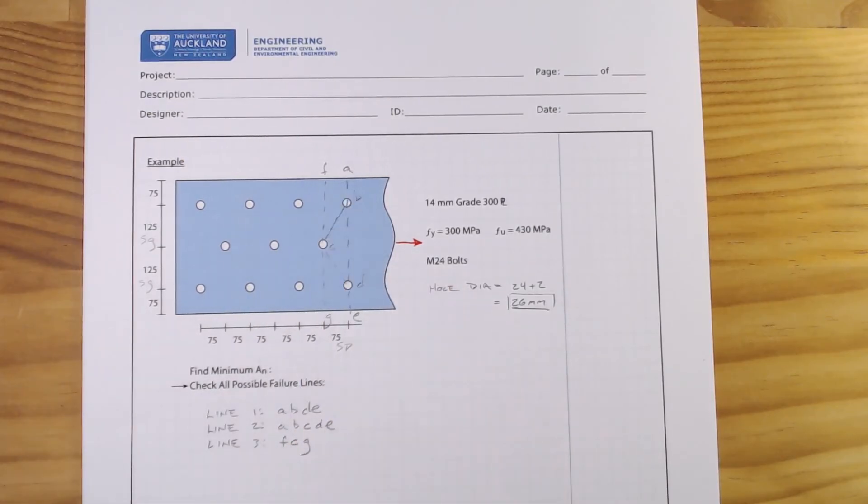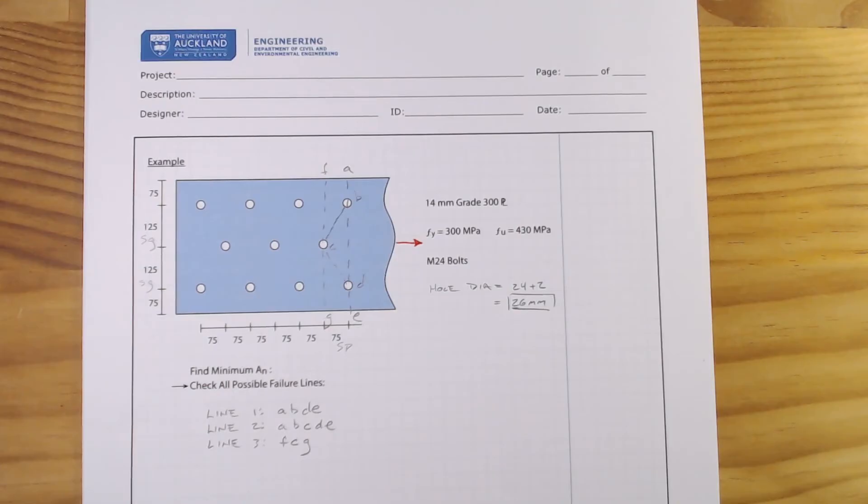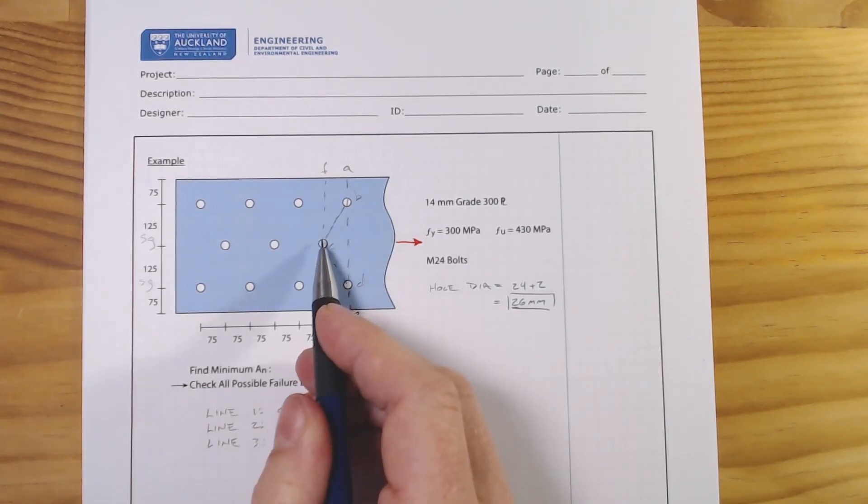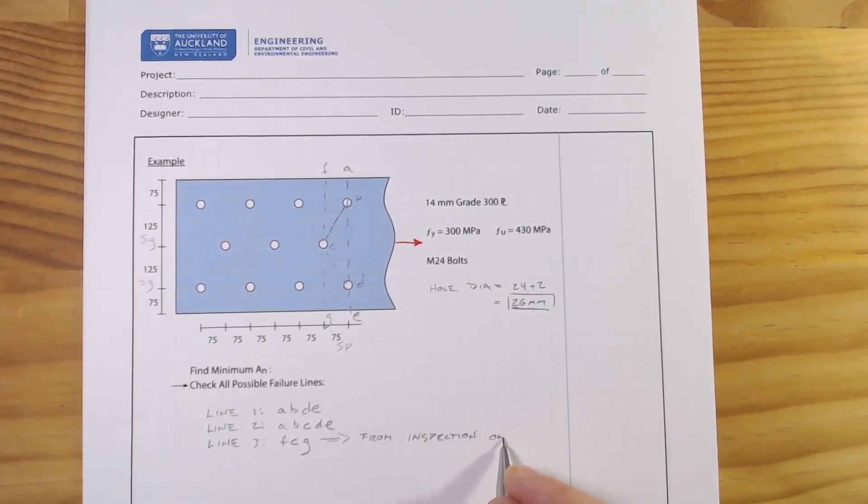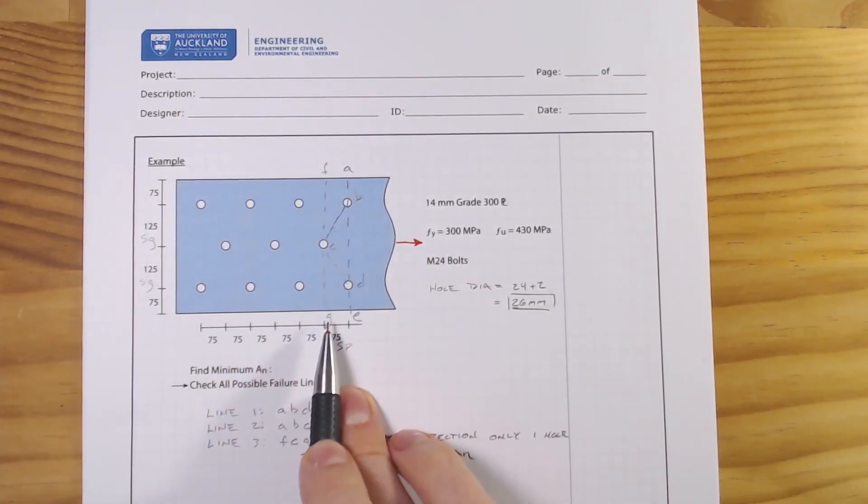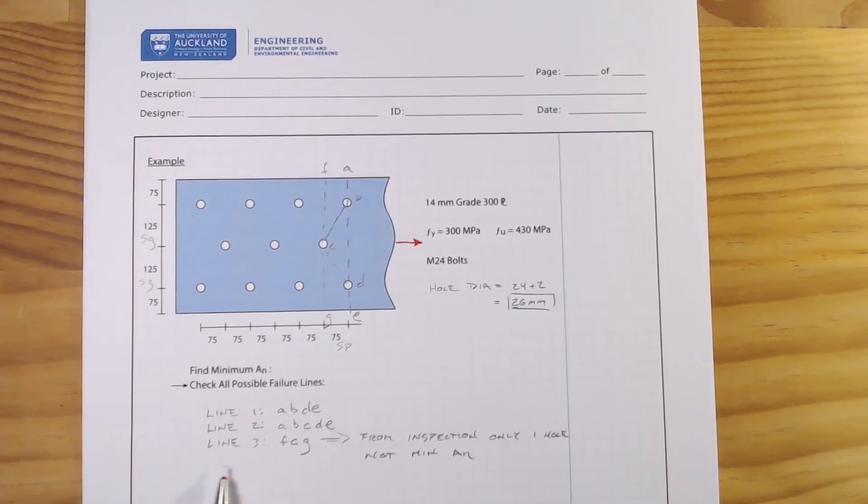And when we do these, we always want to do our design based upon the leading line. Now, a quick bit of inspection. We know that with line three, there's only one hole. This is really, we can determine from inspection that this is not going to be our governing case. So from inspection, only one hole, not minimum AN. And it's also really clear to see that because you have the same gross area subtracting out one hole versus subtracting out two holes here. However, we know that at least line A, B, D, E is going to be bigger than line three.